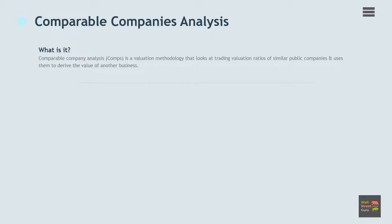We introduce here the first method to performing a valuation analysis, which is comparable company analysis. COMPs is a valuation methodology that looks at trading valuation ratios of similar public companies and uses them to derive the value of another business. COMPs is a relative form of valuation, unlike a discounted cash flow analysis, which is an intrinsic form of valuation.